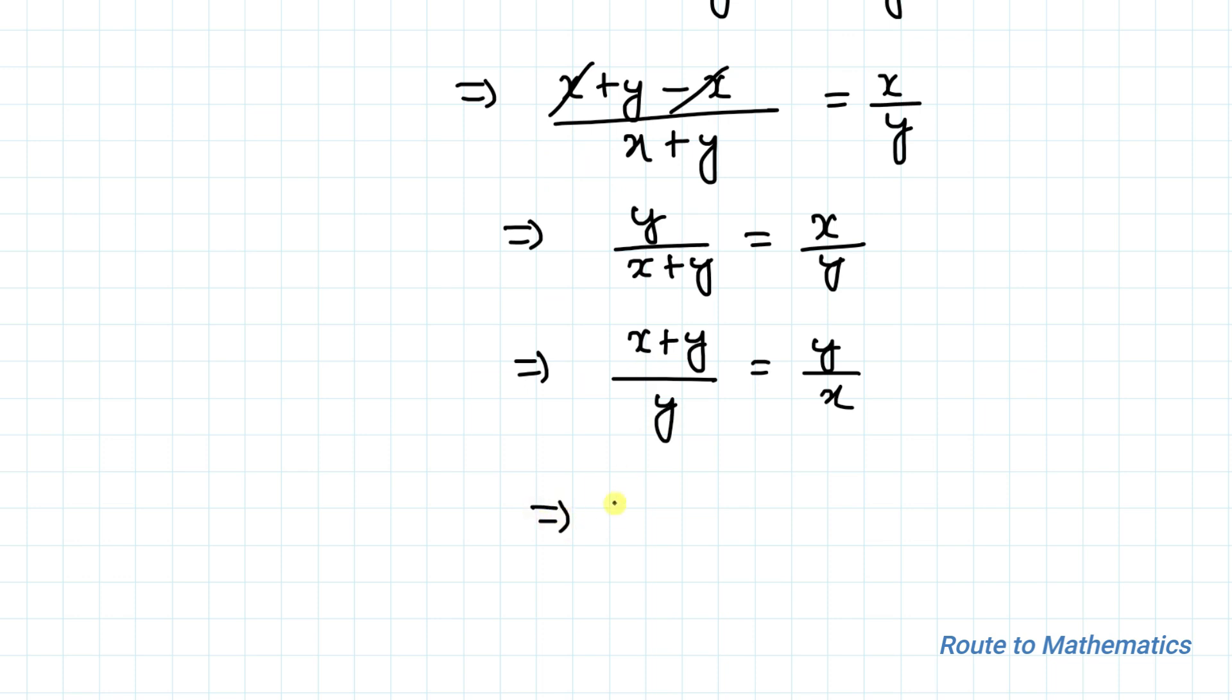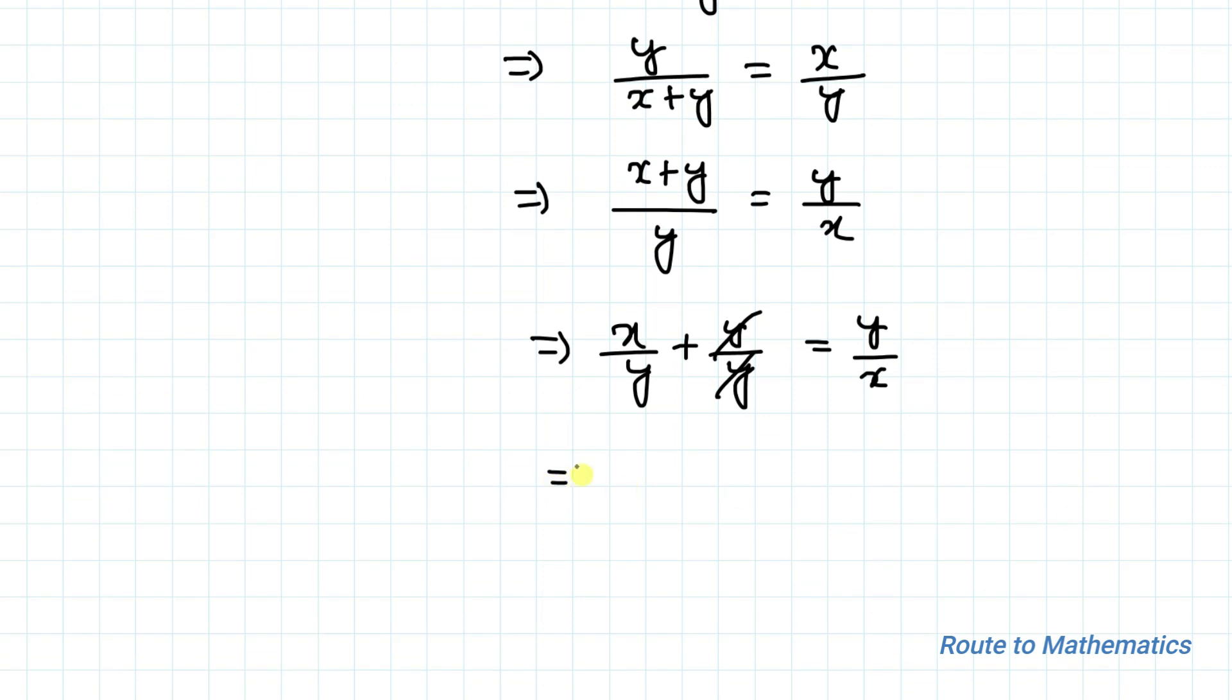We can write x/y + y/y = y/x. y and y get cancelled out, so this implies x/y + 1 = y/x.